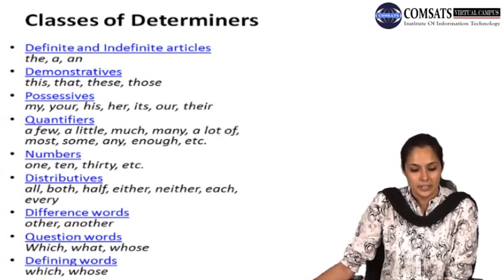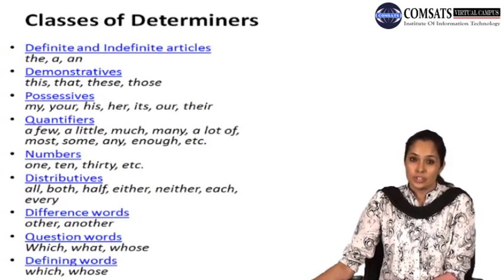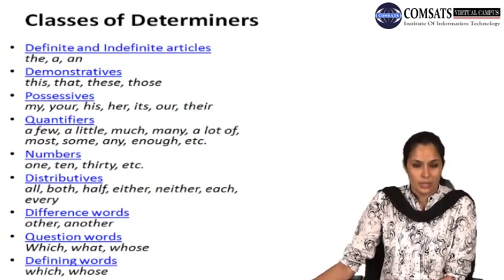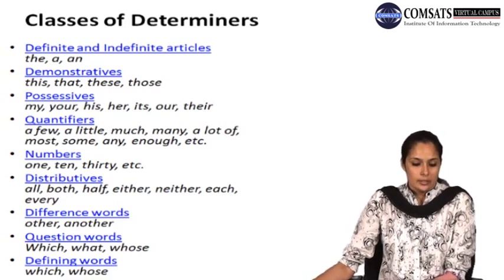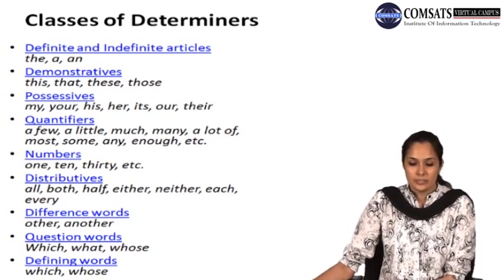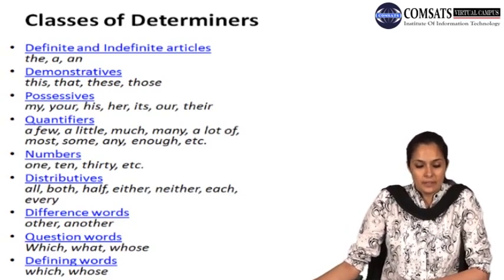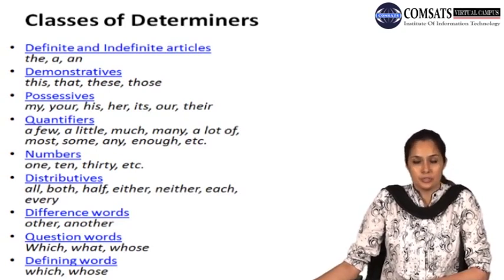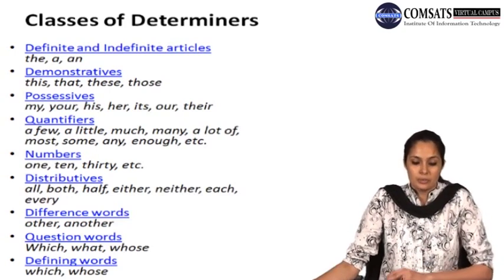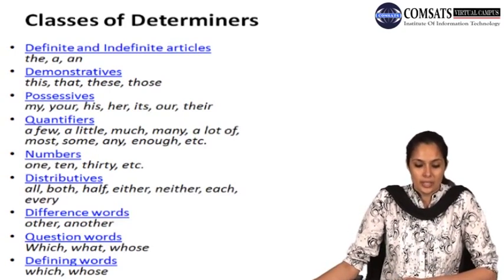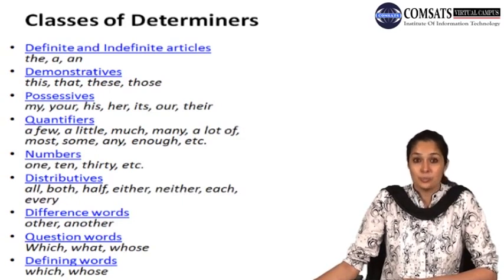Classes of determiners: the first category is definite and indefinite articles — 'the', 'a', 'an'. We have demonstratives: 'this', 'that', 'these', 'those' — which demonstrate anything in front of us. Possessives are 'my', 'your', 'his', 'her', 'its', 'our', 'their' — these show possessiveness. Then we have quantifiers which show quantity: 'a few', 'a little', 'much', 'many', 'a lot of', 'most', 'some', 'any', 'enough', etc.